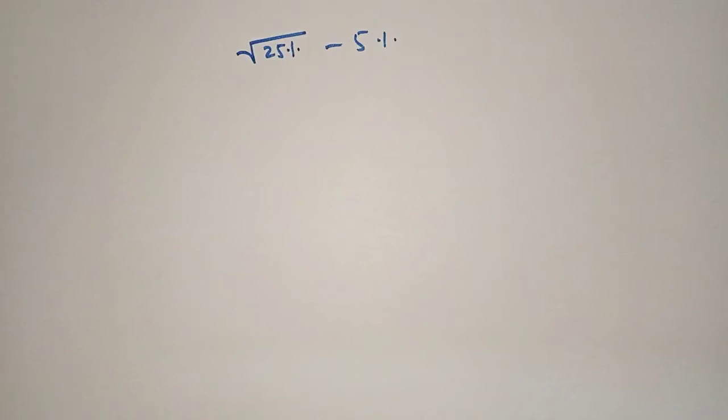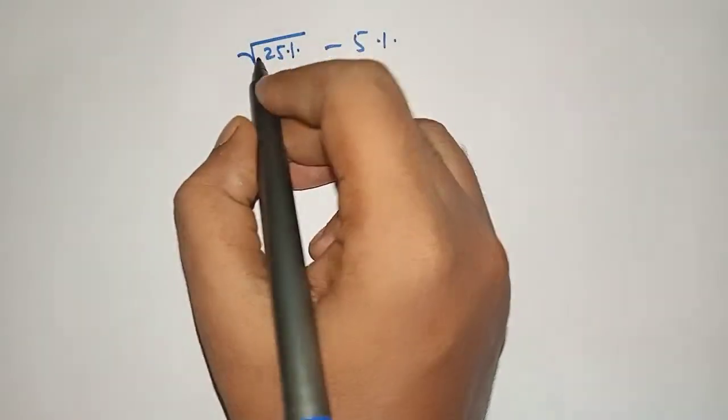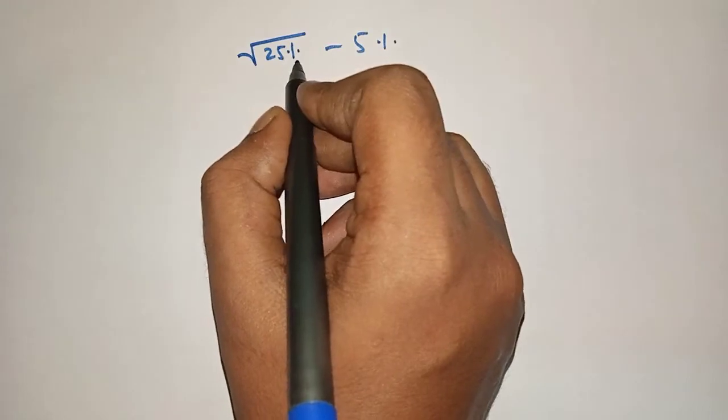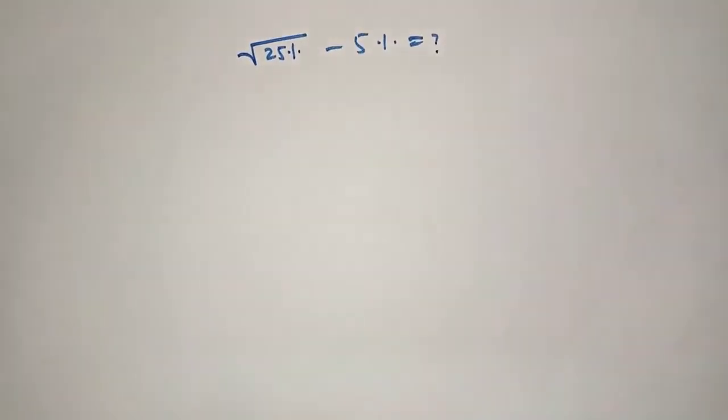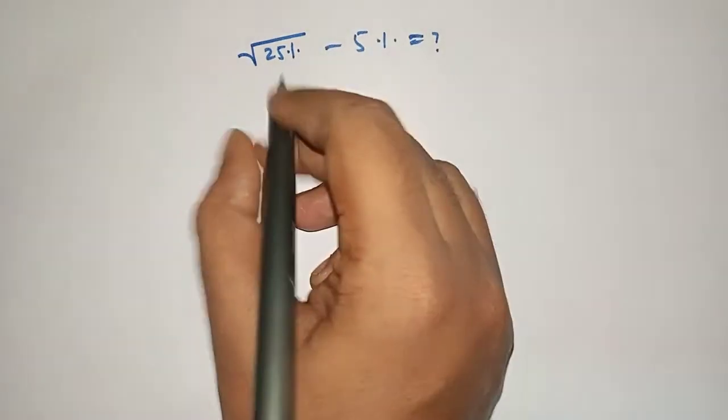Hello friends, welcome to Aha Math. Square root of 25% minus 5% is equal to what? Let's solve. First we will solve this term.